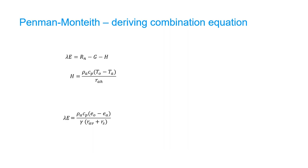The first step in deriving combination equation is utilizing the Bowen ratio, which is simply the ratio between sensible heat flux and latent heat flux. From the aerodynamic expressions of these two fluxes, we obtain this equation.